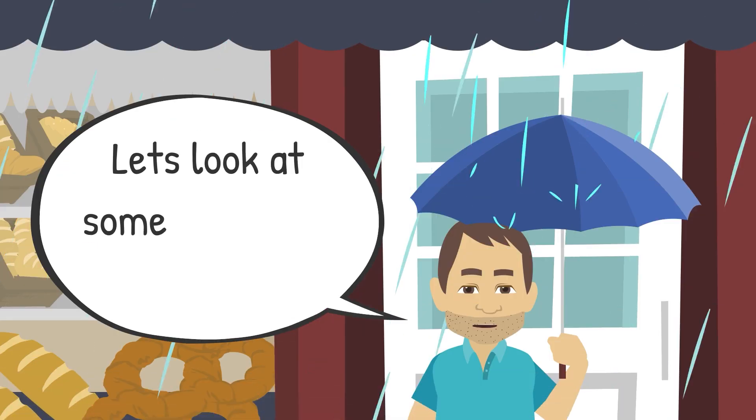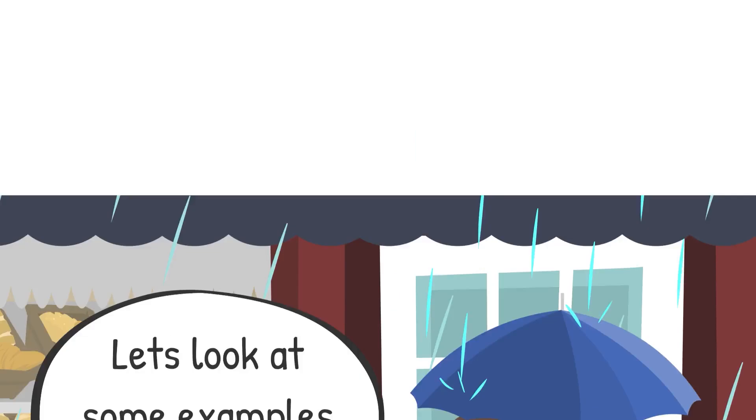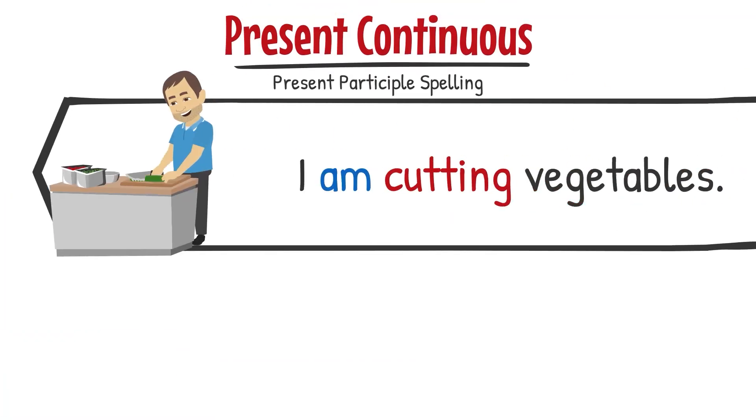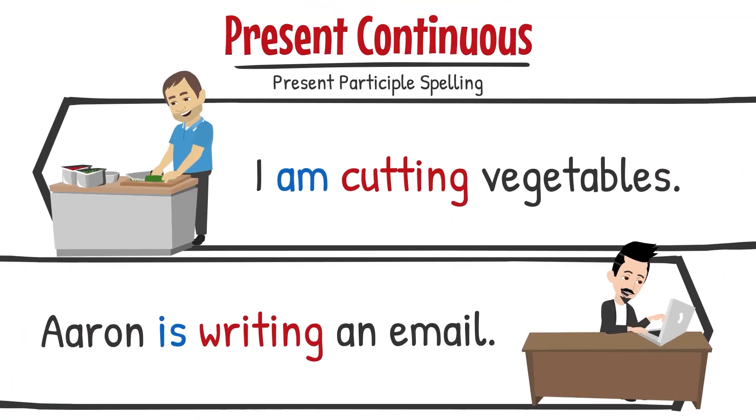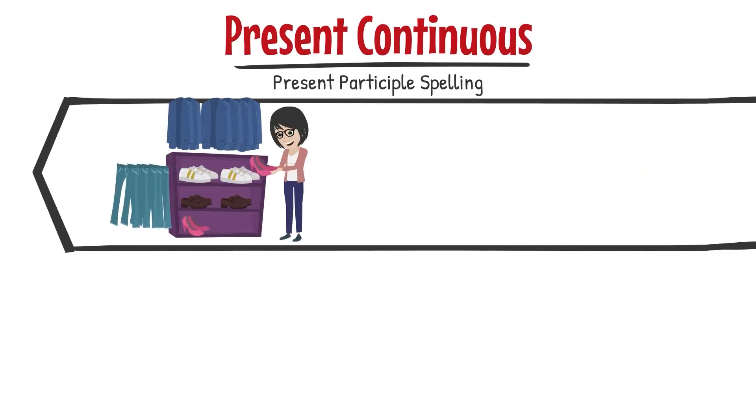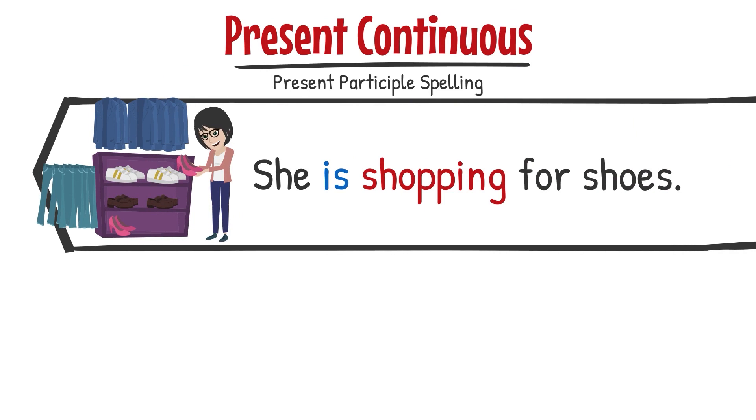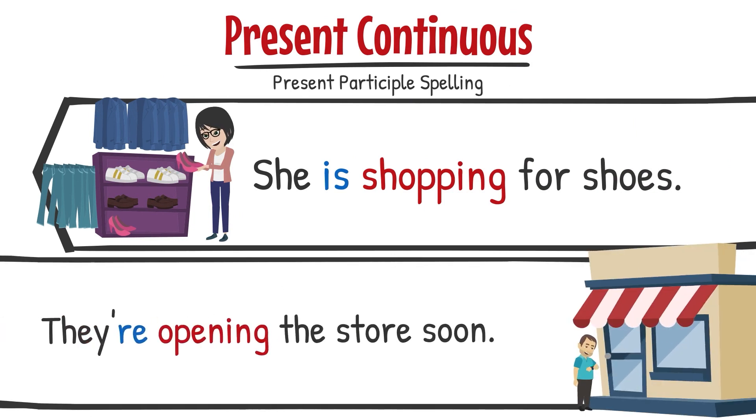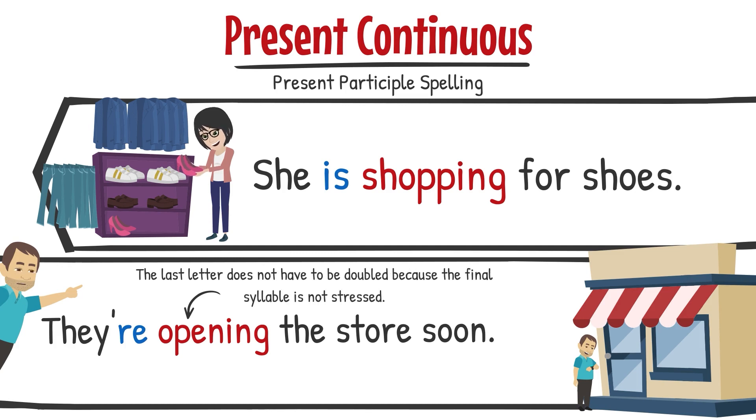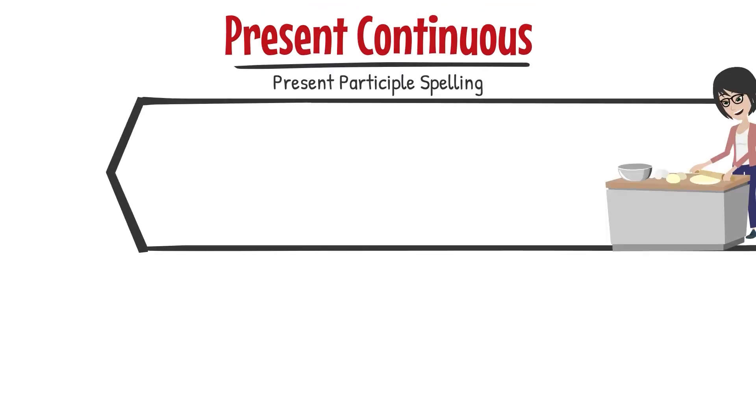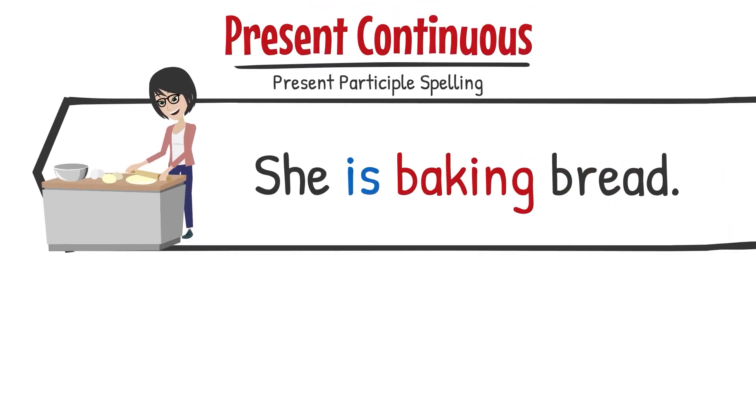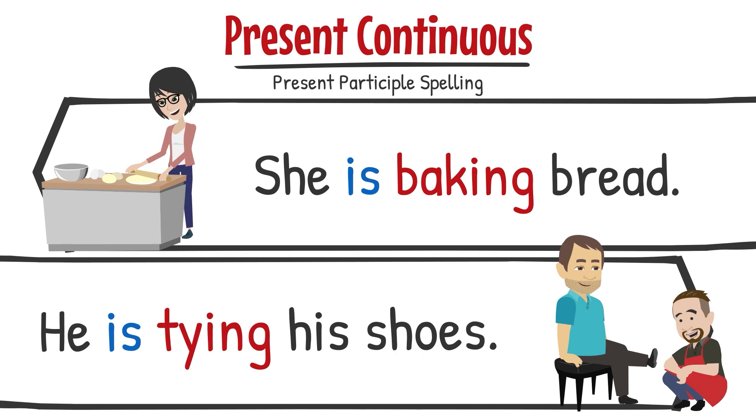Let's look at some examples while I wait. I am cutting vegetables. Aaron is writing an e-mail. She is shopping for shoes. They are opening the store soon. The last letter does not have to be doubled because the final syllable is not stressed. She is baking bread. He is tying his shoes.